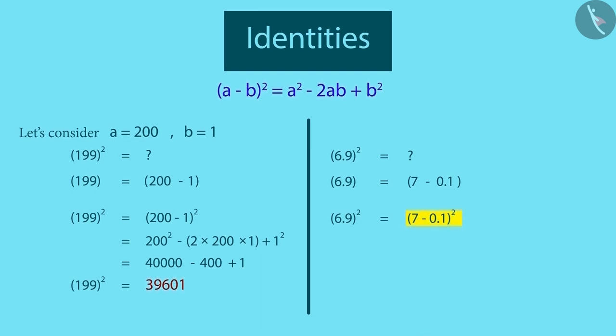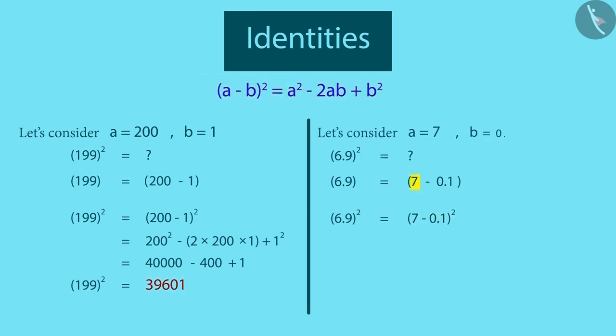7 minus 0.1 raised to the power of 2 can be expanded with the help of this identity. Let's consider a as 7 and b as 0.1 here. Then we will get this. After further simplification, we get this answer.